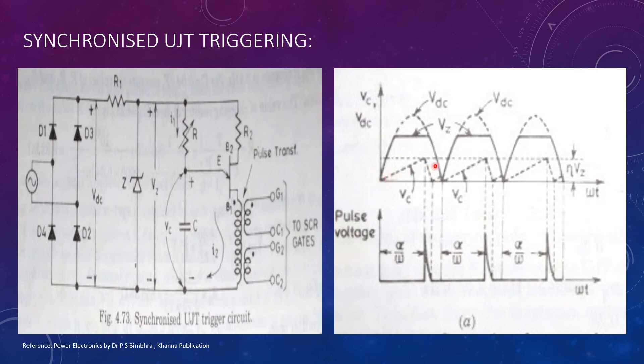The rate of rise of capacitor voltage can be controlled by controlling the value of R. The firing angle can be controlled up to about 150 degrees. This method of controlling output power by varying charging resistor R is called ramp control, open-loop control, or manual control.